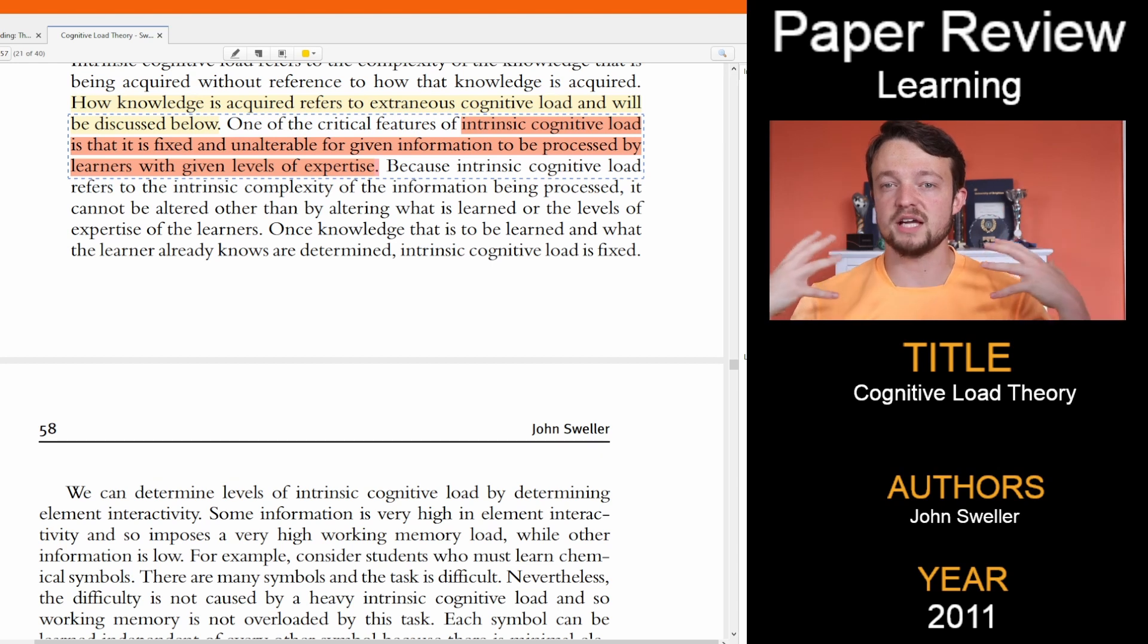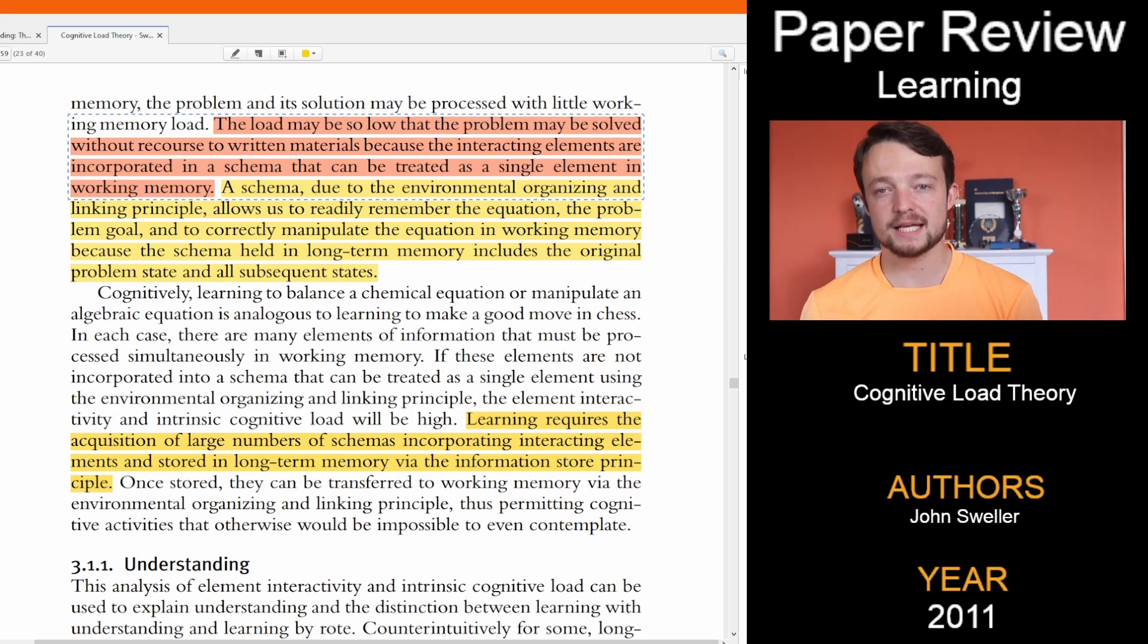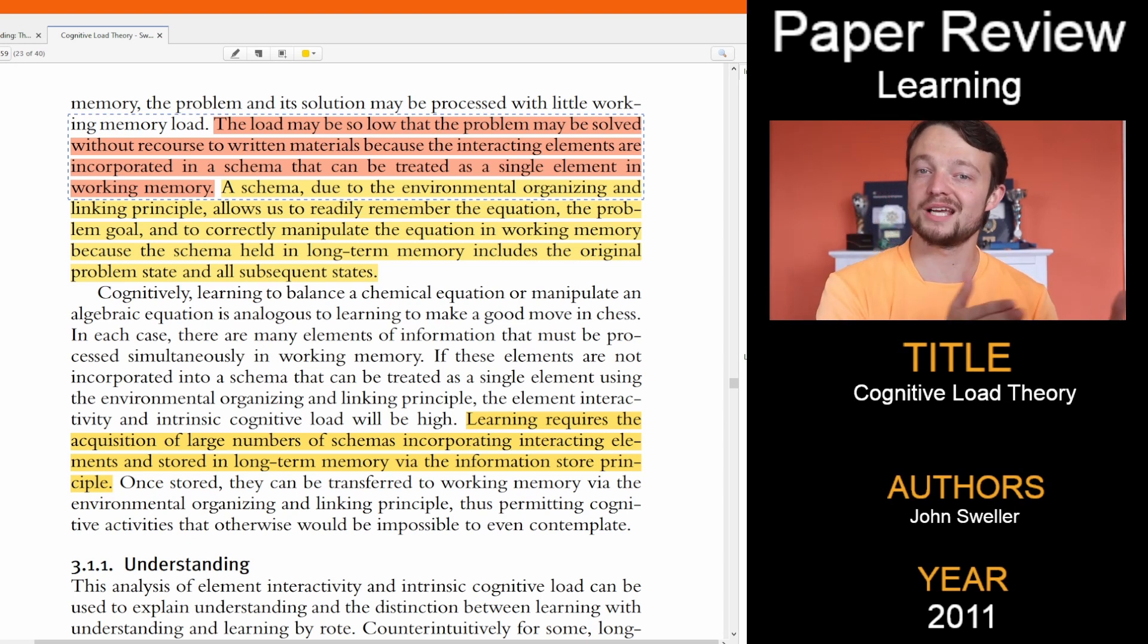All of the processing that happens in our brain supposedly creates a cognitive load, which comes from the environment, the task we are trying to do, and the past information we are using, which is determined by element interactivity. Intrinsic load is fixed once you have started a task, and refers to complexity of the information you are taking in. If the complexity of the information is high, so maybe you are unfamiliar with the thing, the element interactivity will be high, essentially meaning you get overloaded and confused. Alternatively, the information isn't that complex, the intrinsic load is low, and so you can solve the problem.